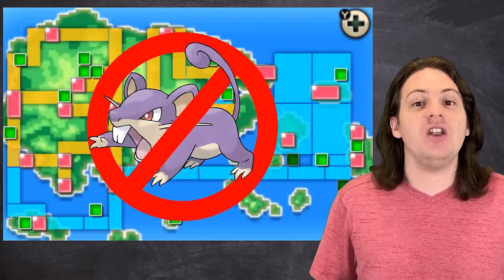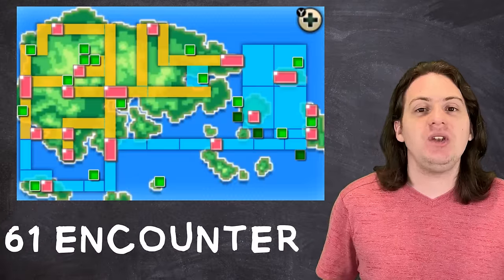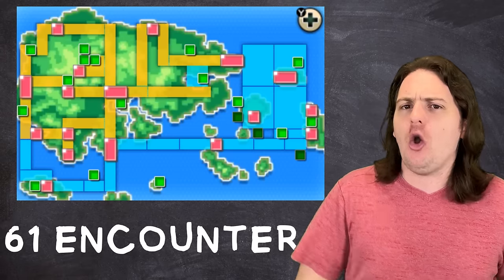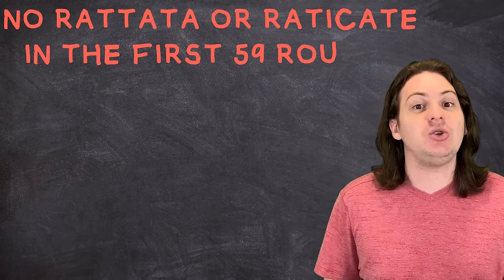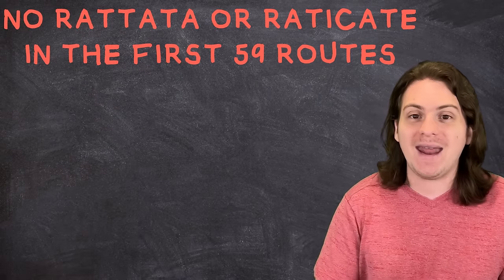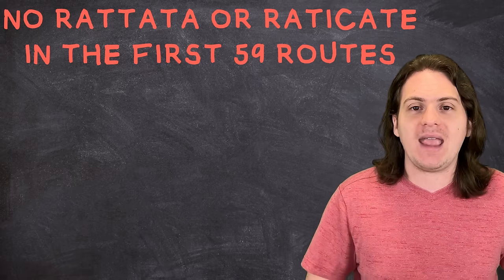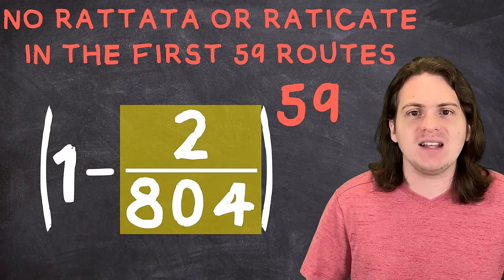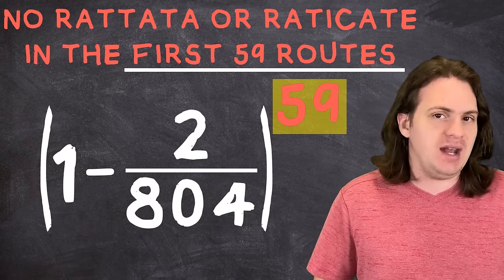Anyway, that means that we also need to factor in the odds that we never encountered another Rattata throughout the whole game. By my count, there are 61 unique encounters available in Omega Ruby and Alpha Sapphire, excluding Legendaries, which are always randomized to be a new Legendary. That means that I had 59 chances to catch a Rattata, or its evolved form Raticate, before this moment. The odds of not finding a Rattata or Raticate on a route is simply one minus the probability of finding one of those two. We need to find the odds of this happening 59 times in a row, so we just need to raise that to the 59th power.